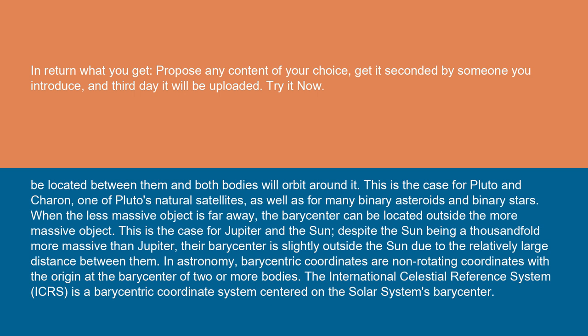When the less massive object is far away, the barycenter can be located outside the more massive object. This is the case for Jupiter and the Sun. Despite the Sun being a thousand-fold more massive than Jupiter, their barycenter is slightly outside the Sun due to the relatively large distance between them.